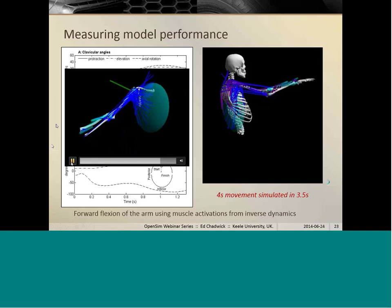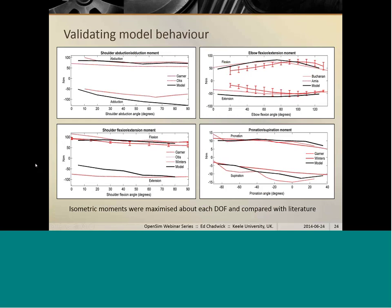So the next thing to look at after model performance is to see what the behavior is like, how closely does the model match data from the literature in terms of its behavior. So what we did here was to do some simulations where we maximized the isometric joint moments around each degree of freedom in each direction and compared those values from the literature for the arm in various different positions. So on the left you can see plots of shoulder abduction on the top, shoulder flexion extension on the bottom, and the solid black lines represent our model simulation results, and the red lines of varying types show the data from the literature.